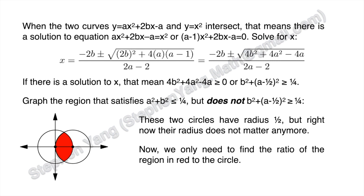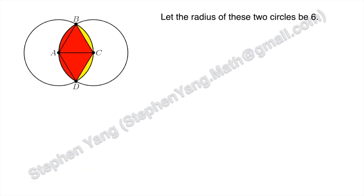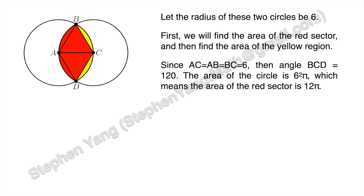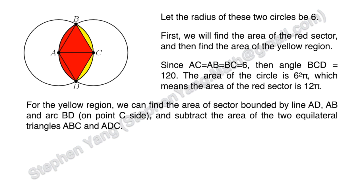We only need to find the ratio of the red region to the circle. Let the radius of both circles be 6. We'll find the area of the red sector and the area of the yellow region and add them together. Since AC equals AB equals BC equals 6, then angle BCD equals 120 degrees. The area of the circle is 6 squared times pi, so the area of the red sector is 12 pi. For the yellow region, we find the area of the sector bounded by lines AD, AB, and the arc BD on the C side, then subtract the area of two equilateral triangles ABC and ABD.